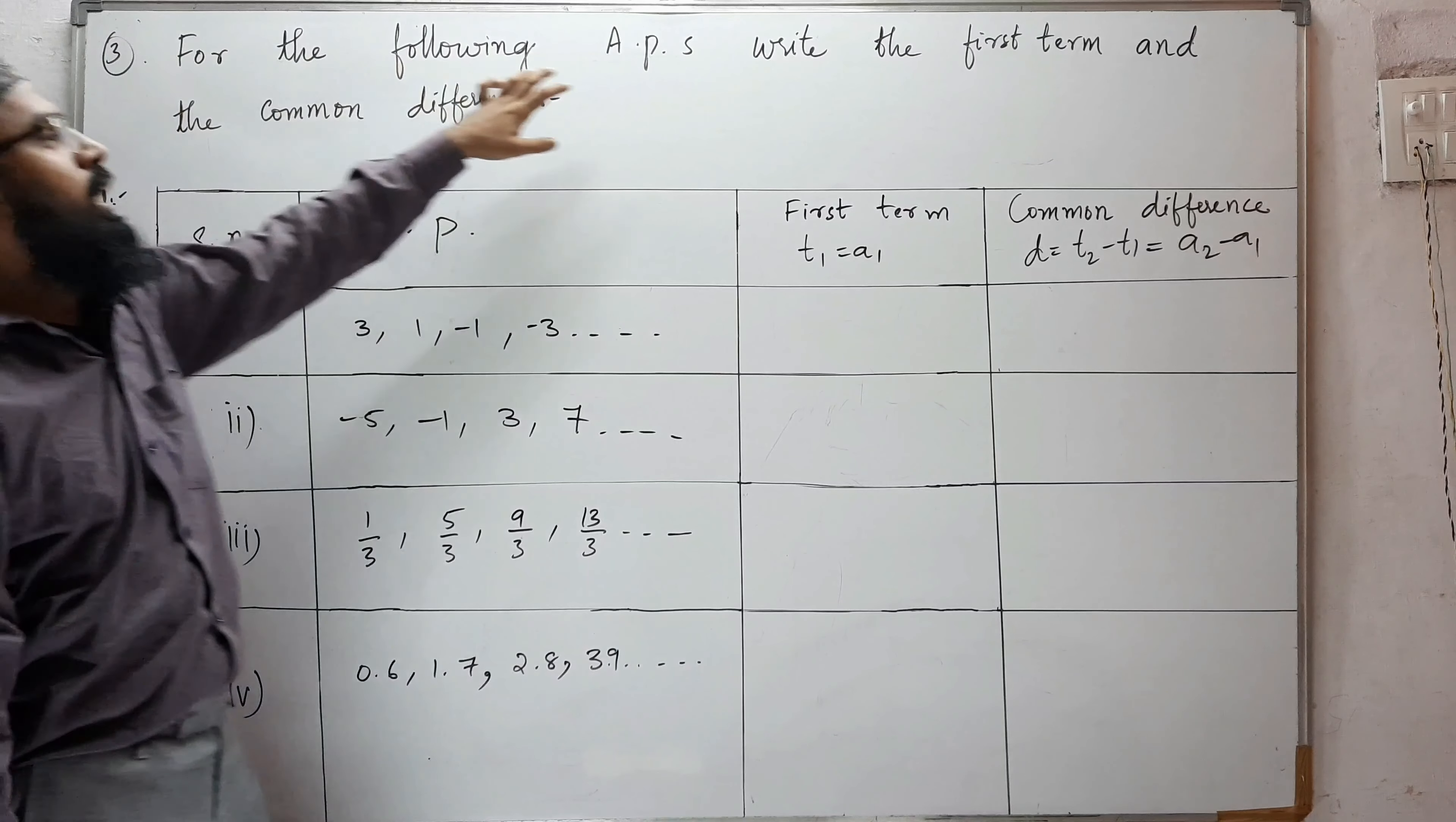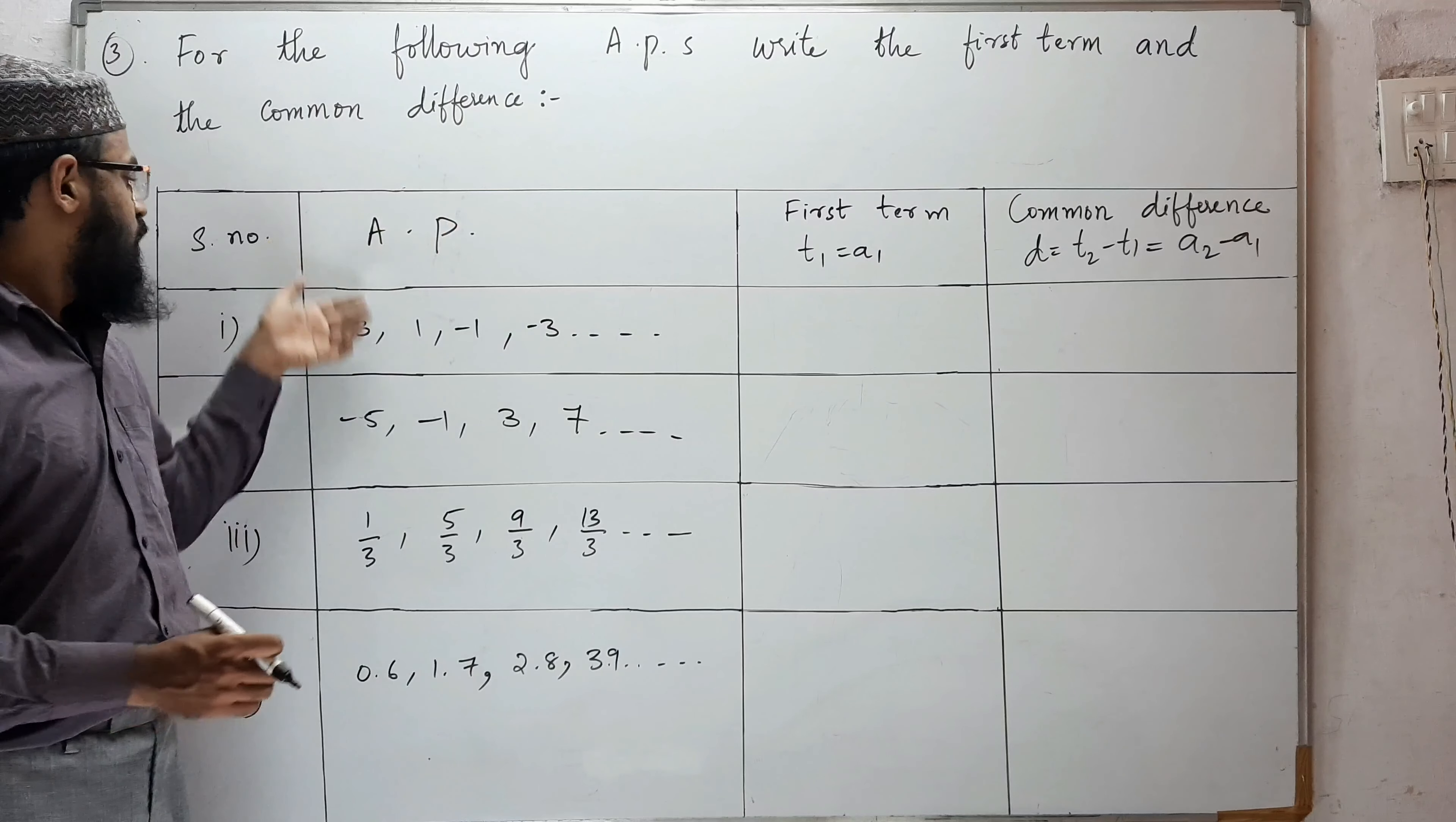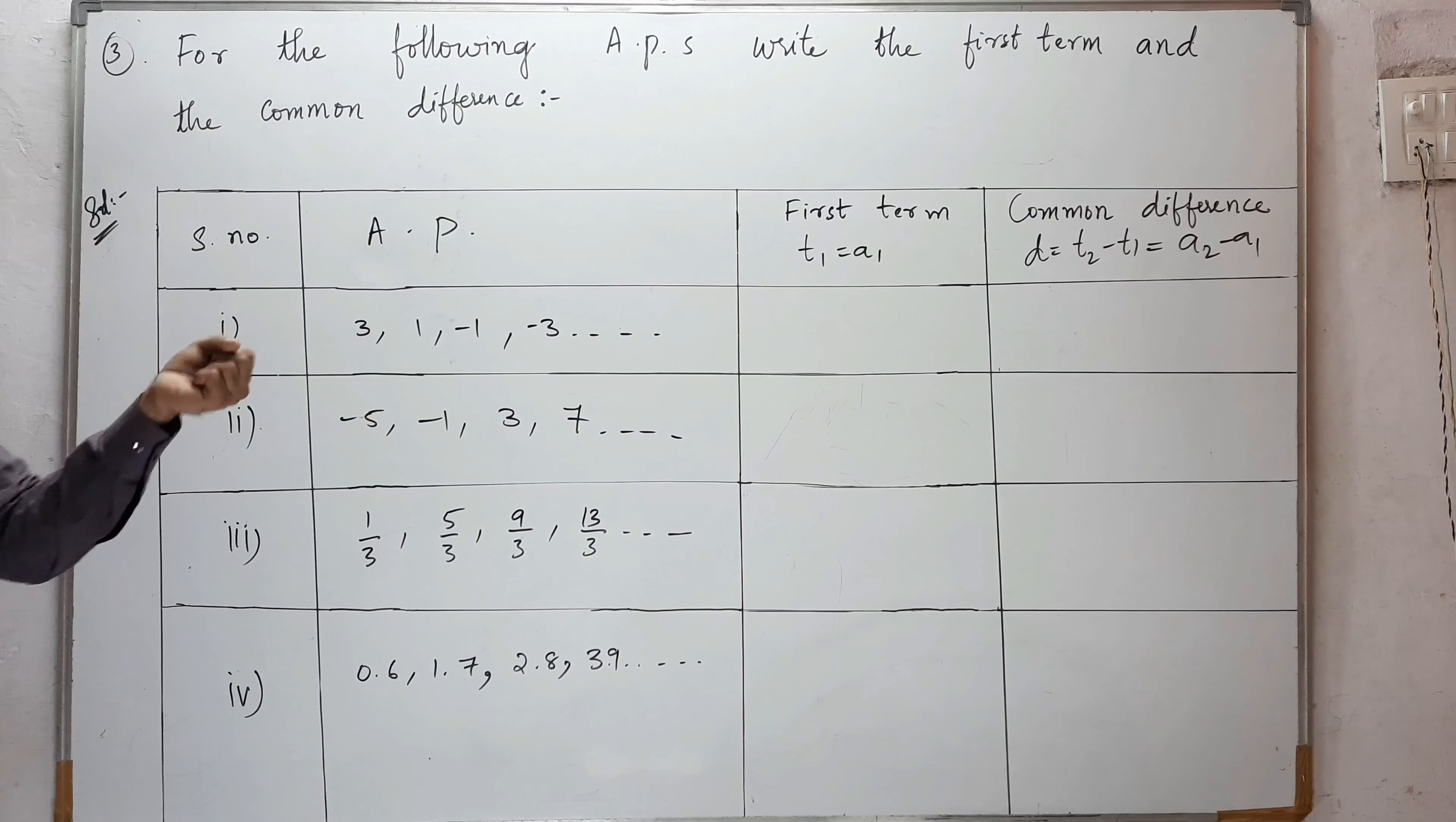Third problem: for the following APs, write the first term and the common difference. We have to write the first term and the common difference for the given APs. These are the sub-terms: first, second, third, fourth, fifth, and so on. From this, we have to write the first term and the common difference.